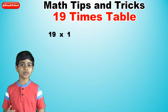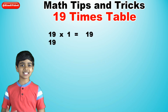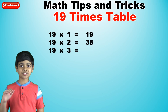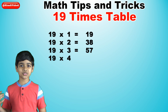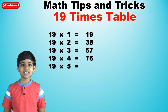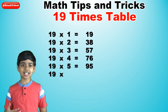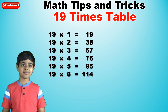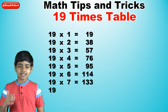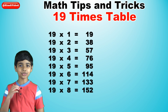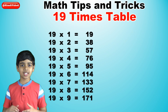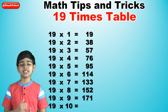19 times 1 is 19. 19 times 2 is 38. 19 times 3 is 57. 19 times 4 is 76. 19 times 5 is 95. 19 times 6 is 114. 19 times 7 is 133. 19 times 8 is 152. 19 times 9 is 171. And finally, 19 times 10 is 190.